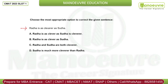Radha is as cleverer as Sudha. If you can see here, there is a comparison sentence in comparative degree. The right answer should be: 'cleverer' is never used in an 'as...as' construction. In an 'as...as' construction, you use the base form 'clever'. So 'as cleverer as' is wrong. The correct form is 'as clever as'. This is the right answer.